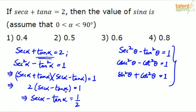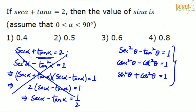Actually, sec α + tan α and sec α - tan α are reciprocals of each other. So if sec α + tan α = 2, then sec α - tan α = 1/2. The trick is: if sec α + tan α = x, then sec α - tan α = 1/x. You can apply this shortcut directly in future questions without writing all the steps.